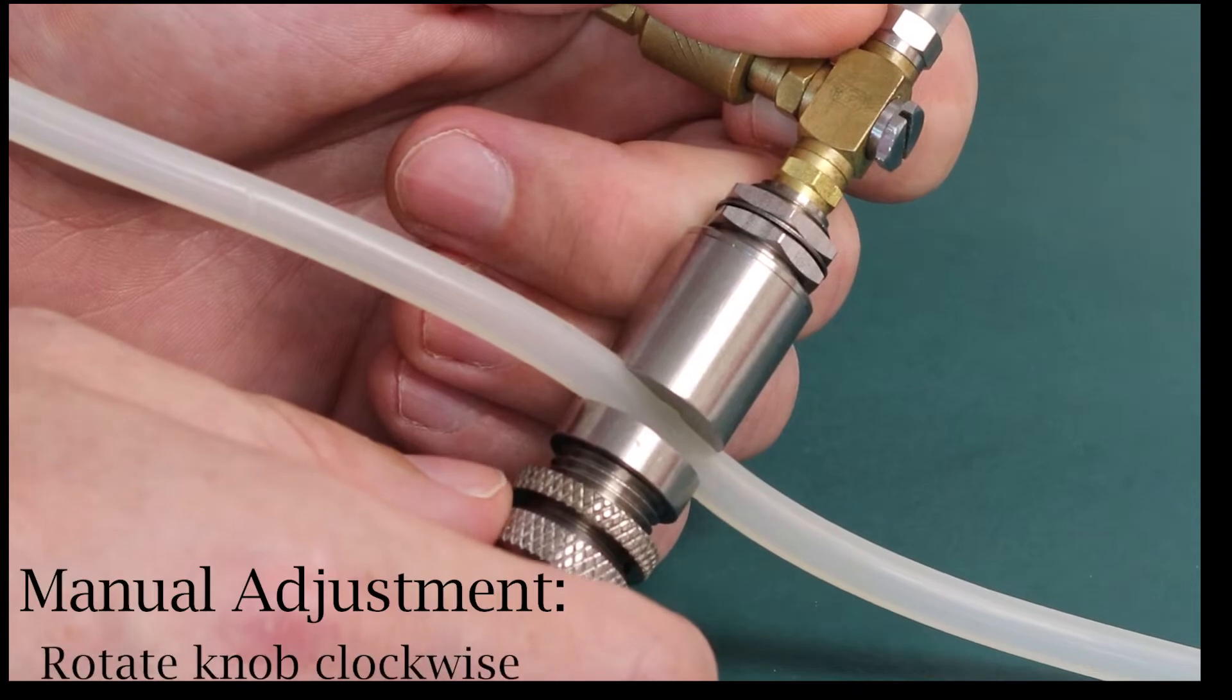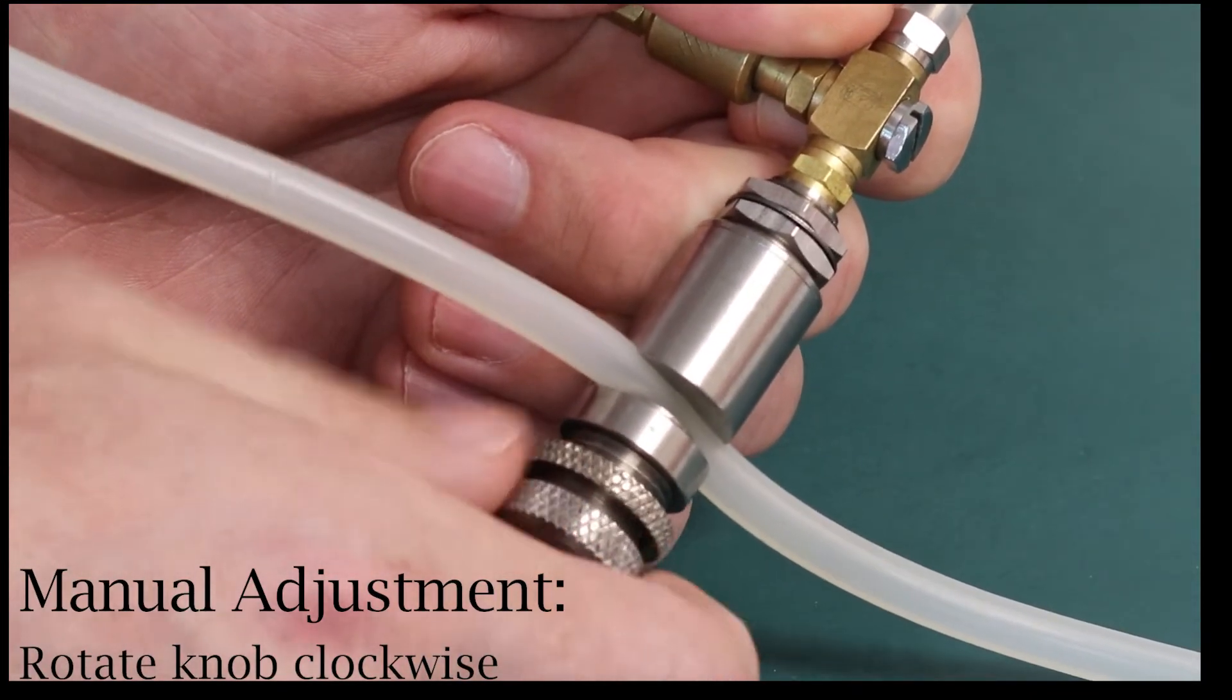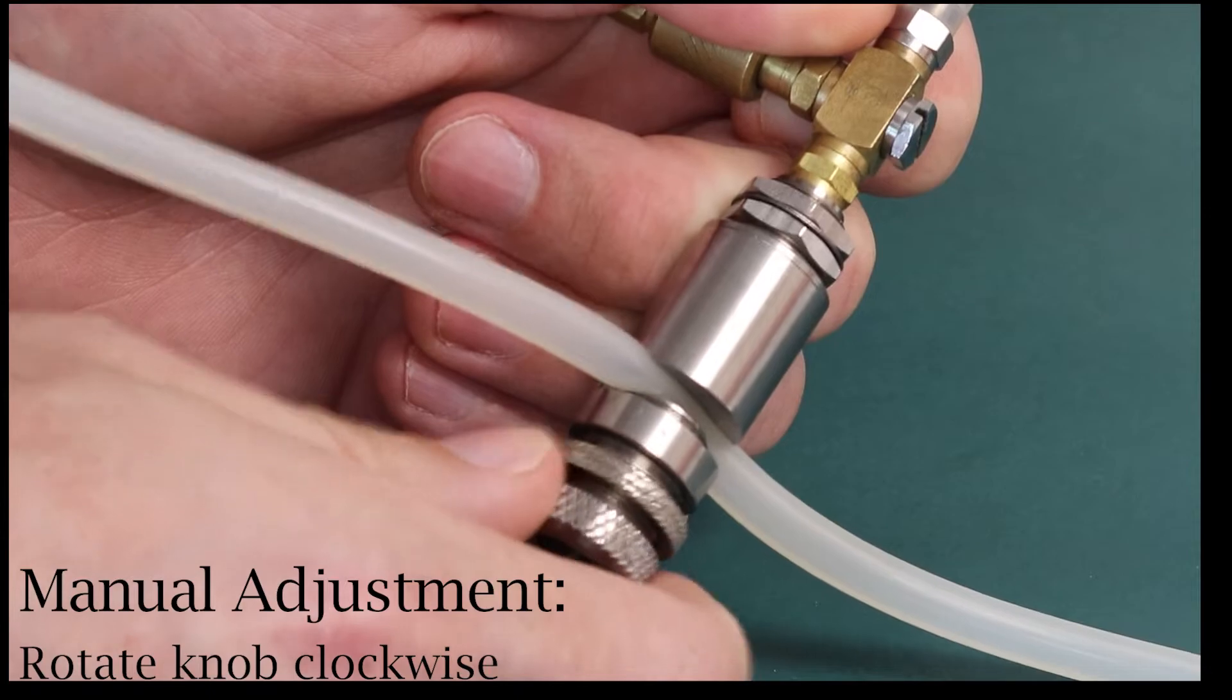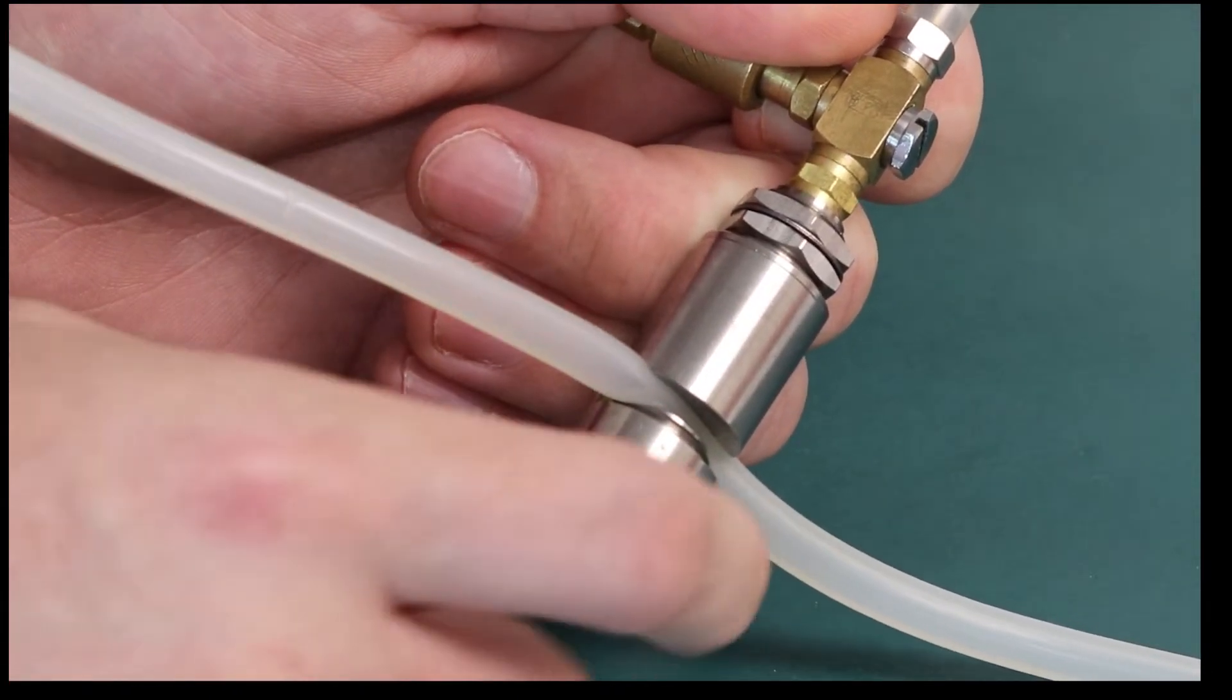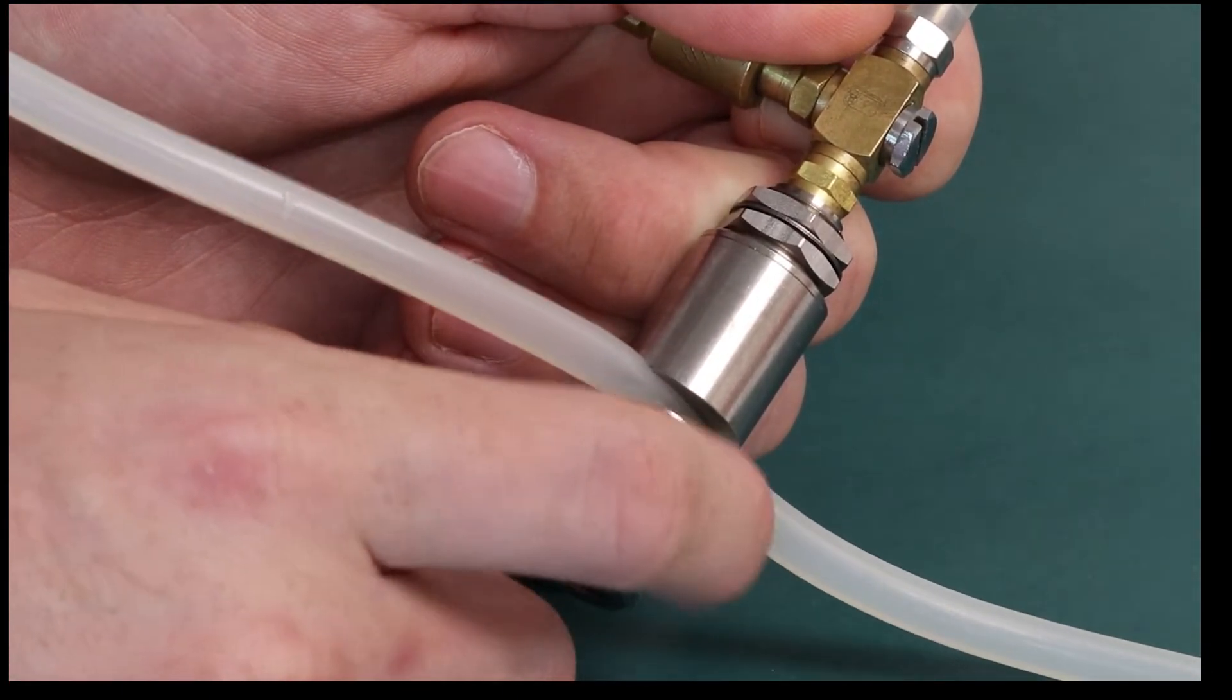For the manual adjustment, rotate the knob in a clockwise direction to pinch the tubing which restricts the flow. Then, you can use the lock washer to lock the adjustment into place.